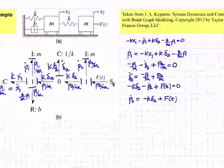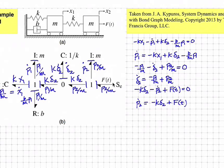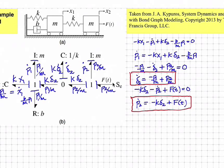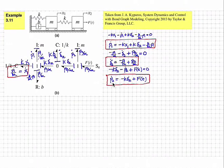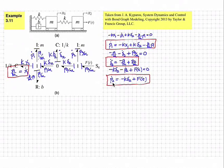We have four differential equations: x1 dot equals p1 over m; p1 dot equals minus kx1 plus k delta 2 minus (b/m) p1; delta 2 dot equals minus p1 over m plus p2 over m; and p2 dot equals minus k delta 2 plus f(t). This system has four energy storing elements, all in integral causality, and thus we have four differential equations — one each for x1, p1, delta 2, and p2.